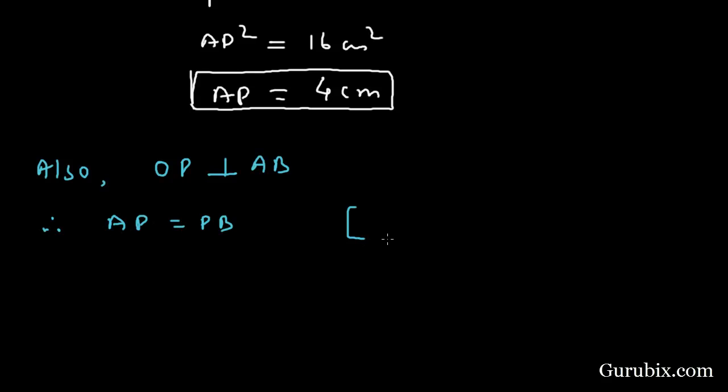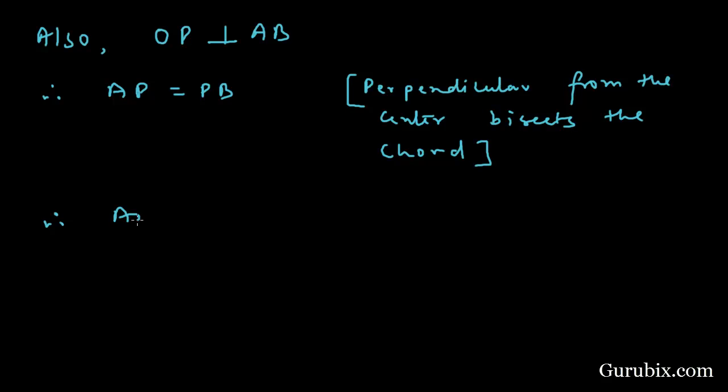Therefore, AB = AP + PB. Since PB equals AP, we can write AB = AP + AP = 2 × AP, which means 2 × 4 centimeters.